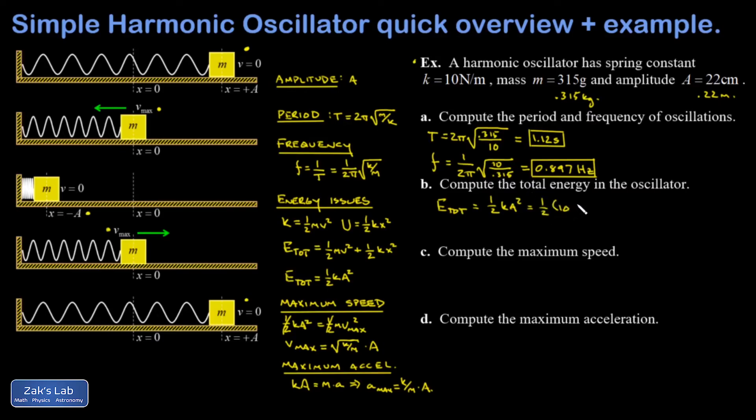Part B: compute the total energy in the oscillator. That's one half kA squared, so one half times 10 times A squared. I changed the amplitude to meters so this should come out in joules, and I get 0.242 joules.